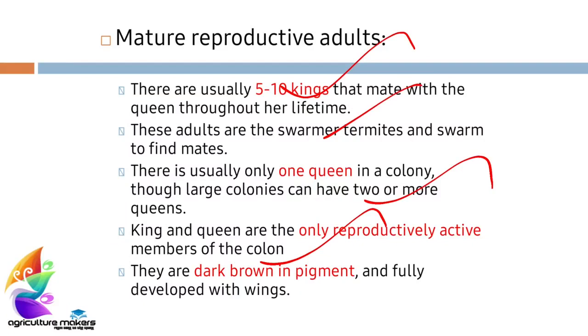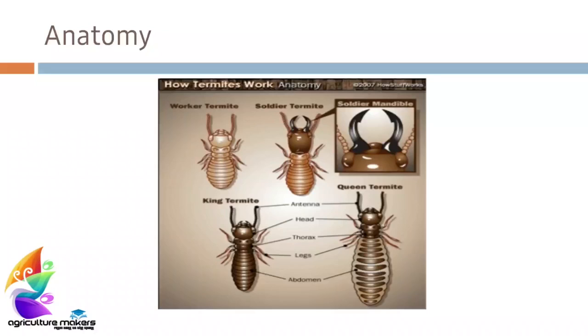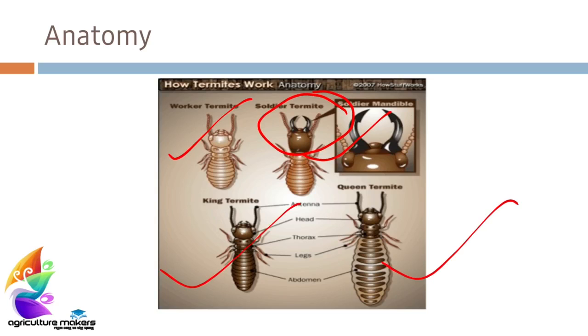The other members are not colored and they do not have wings — they are blind. You can see in the picture: this is the worker termite, this is the soldier with visible mandibles, and here are the king and the queen.